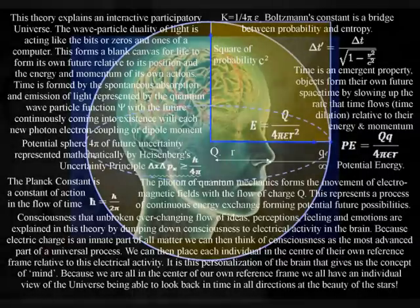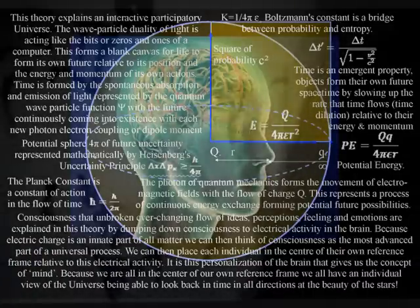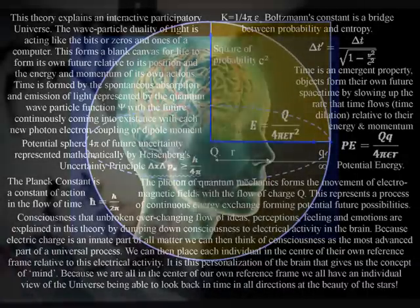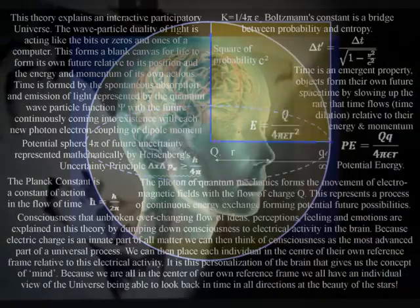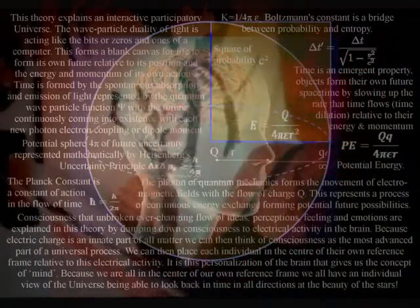Therefore the electrical activity within the brain that forms conscious awareness must be unfolding photon by photon relative to the structure of the brain. Because of the great complexity of the brain this represents the most advanced part of a universal process that is aware of its own electrical potential. Each individual is in the moment of now in the centre of their own reference frame within this process of continuous energy exchange or continuous creation.